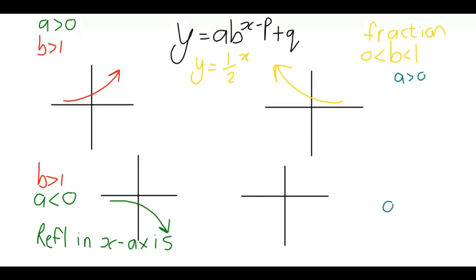And now, it looks to the other side. There you go. If the a is also positive. In the case where the a is negative and the b is still a fraction, so it's still between 0 and 1, it will once again be a reflection in the x-axis.